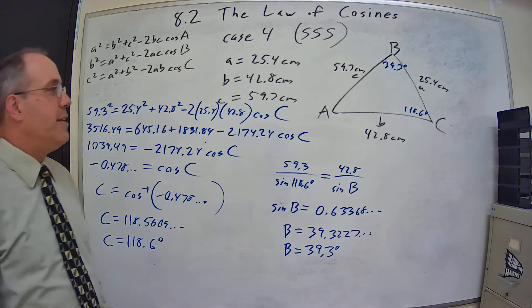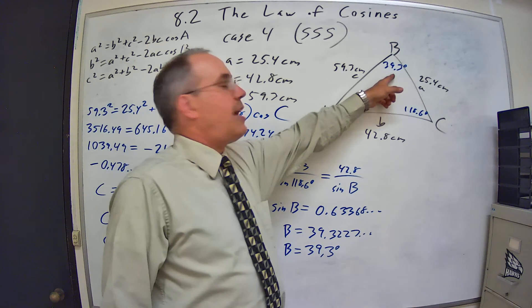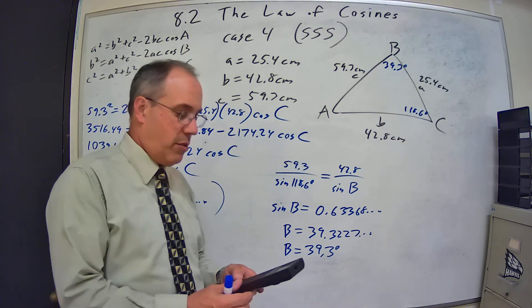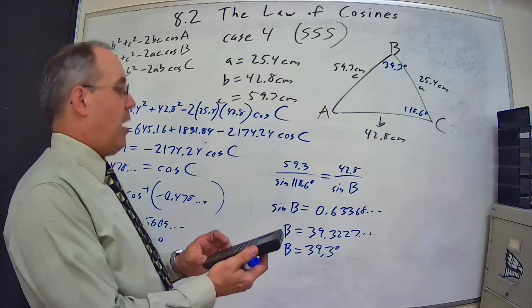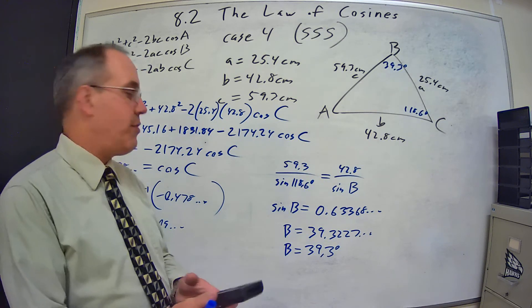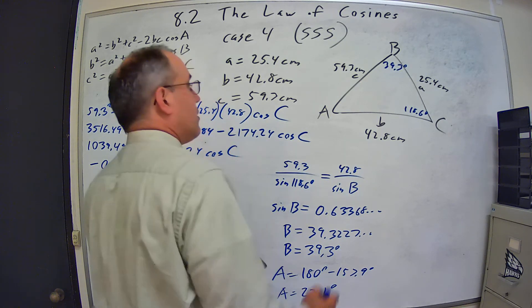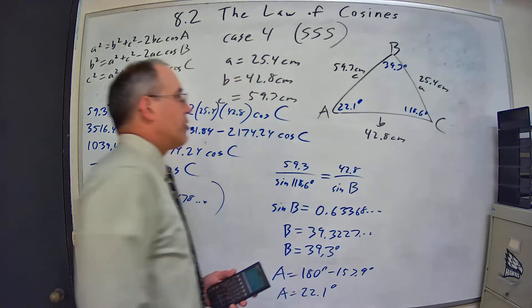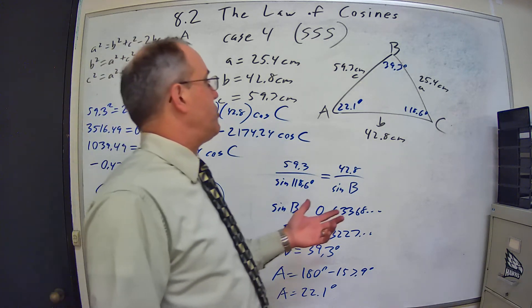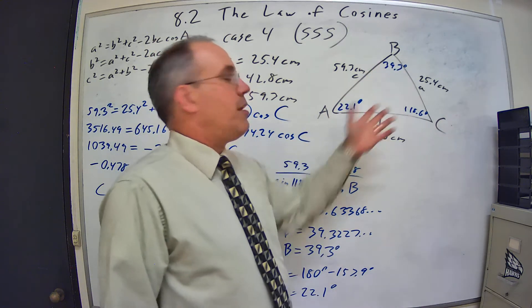So 39.3 degrees. Now that I've used the law of cosines to get my largest angle and the law of sines to get a second angle, I can now use the sum of interior angles to get the final angle. So 118.6 plus 39.3 gives me 157.9. So angle A is equal to 180 degrees minus 157.9 degrees, gives us A is equal to 22.1 degrees. So 22.1 degrees is my final angle. And the answers do make sense because the smallest angle is opposite the shortest side, the largest angle is opposite the largest side. And it all works out.